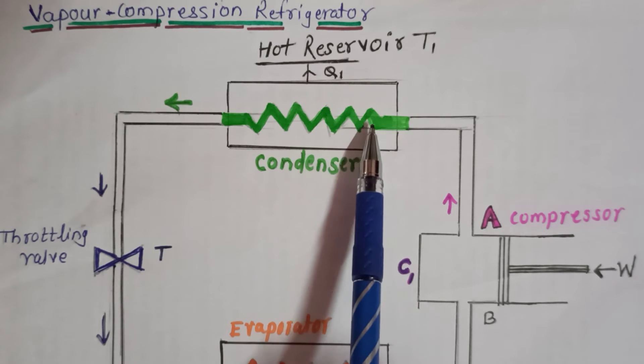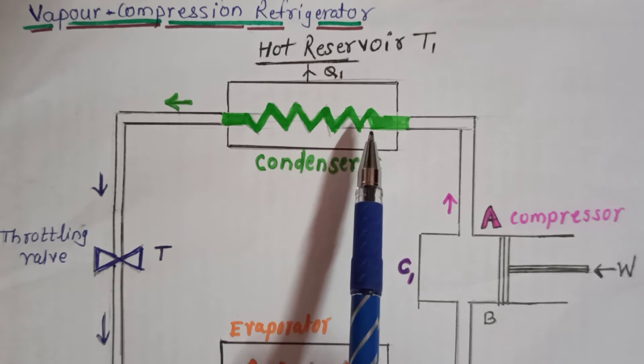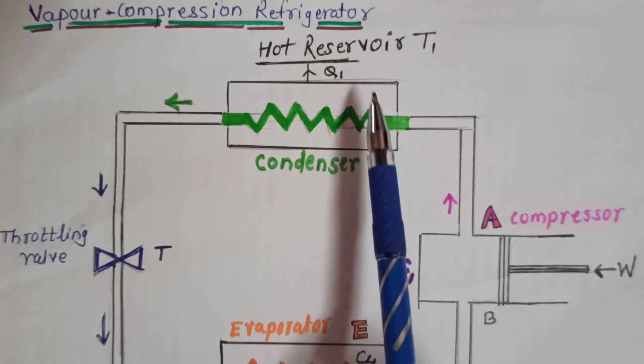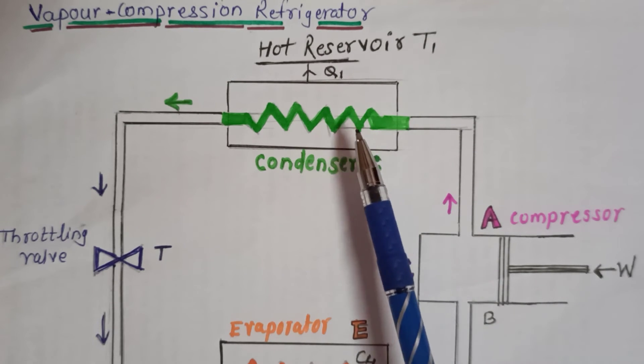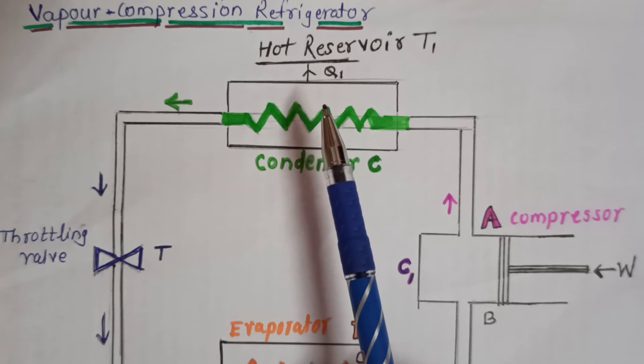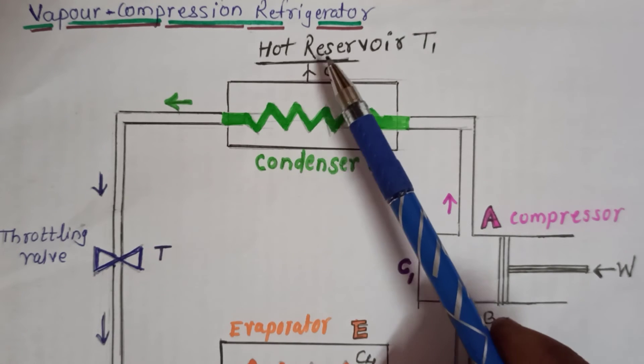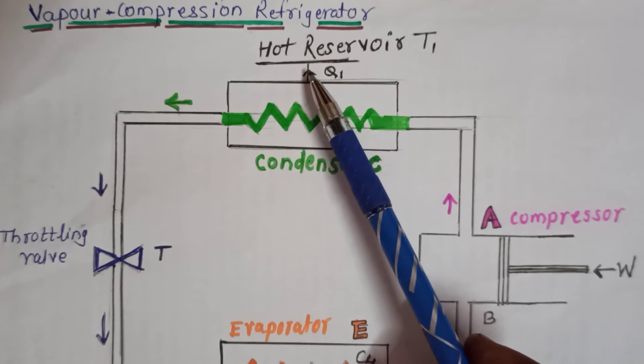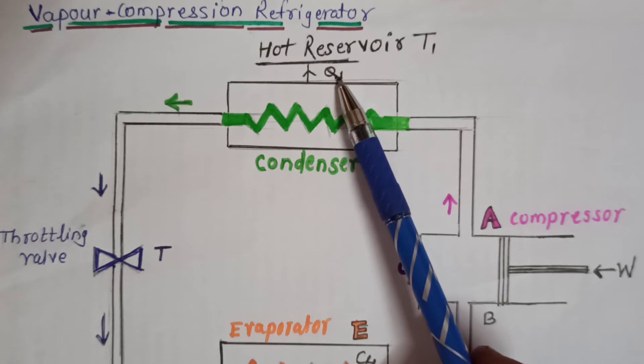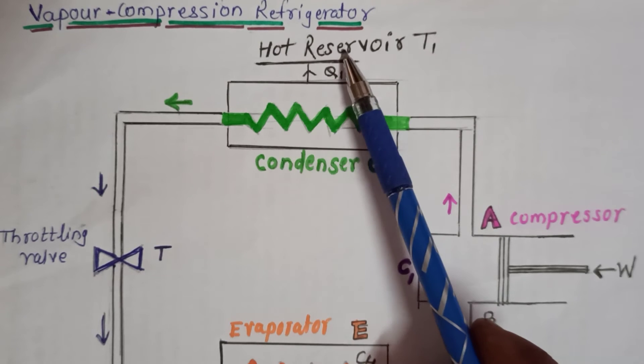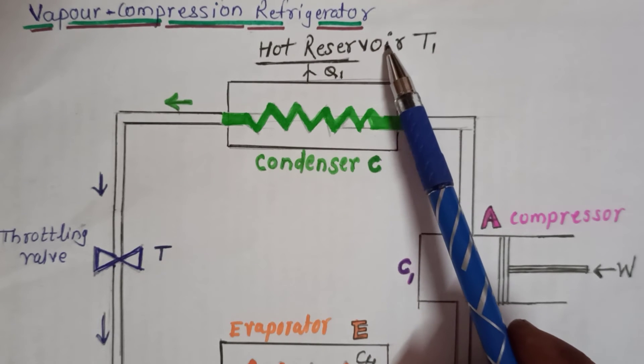The temperature of this gas decreases and it is in the condensed form. This gas cooled, heat given out to the surrounding. That is, amount of heat Q1 is given to hot reservoir, that is surrounding.